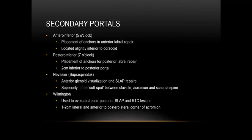There are several secondary portals that can be developed to assist with specific procedures. The antero-inferior portal at the 5 o'clock position is used for placement of anterior anchors for anterior labral repair, located just inferior to the coracoid. The posterior inferior portal at 7 o'clock is for placement of anchors for posterior labral repair, located 2 cm inferior to the posterior portal. The Neviaser portal is inserted between the acromion and clavicle at the soft spot triangle, used for visualizing the glenoid for SLAP repair. The Wilmington or anterolateral portal, 1 to 2 cm lateral and anterior to the posterior corner of the acromion, is for posterior SLAP repair and rotator cuff repair.